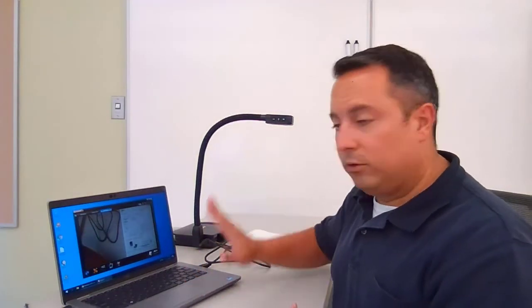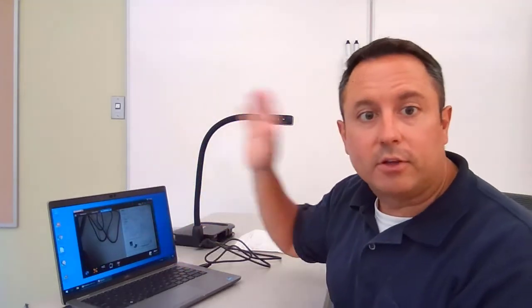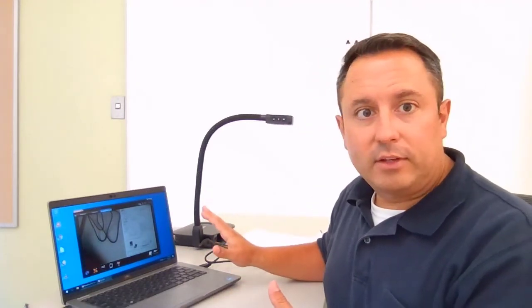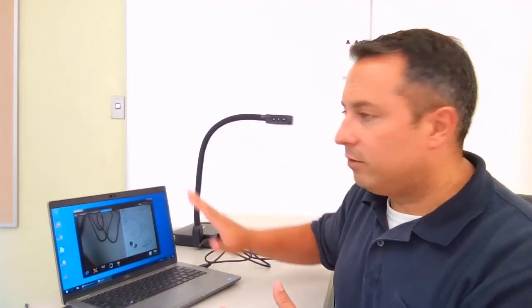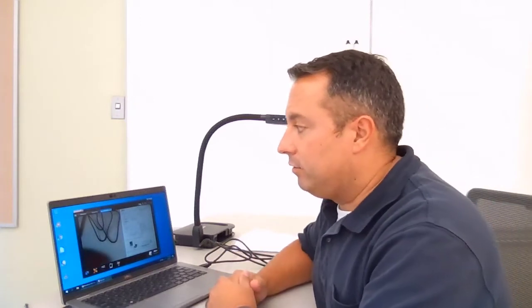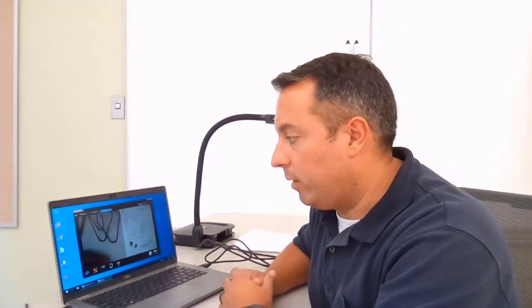You're just going to flip it around until it makes sense and it's straight up and down like you would expect. Now with the document camera connected to the computer, to display this up on your projector you're going to want to connect your computer to the projector. You can see the previous video for how to connect your computer to the projector.